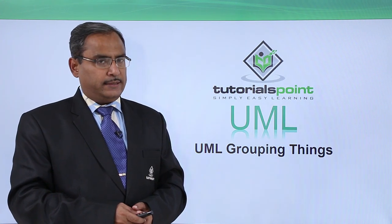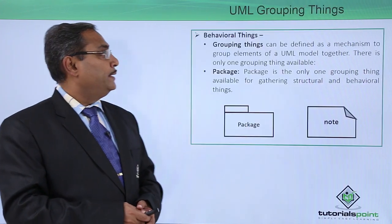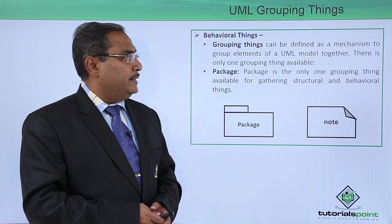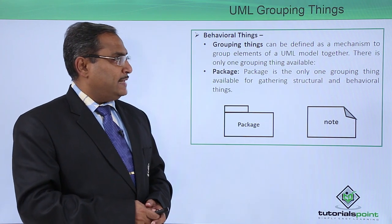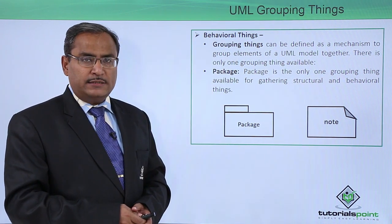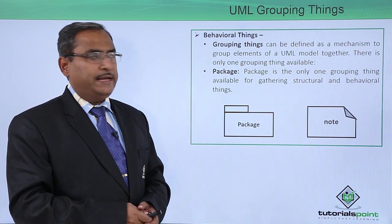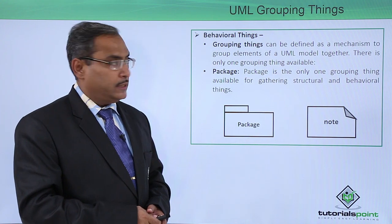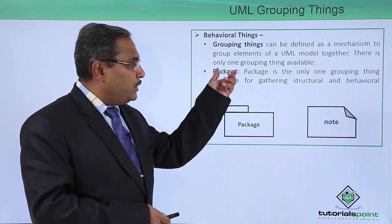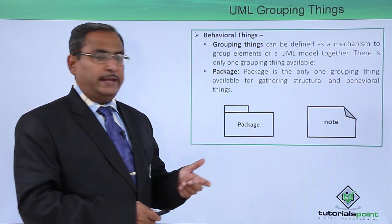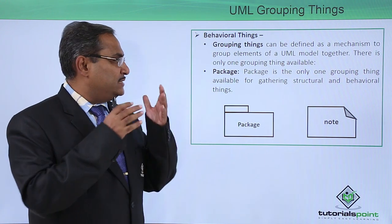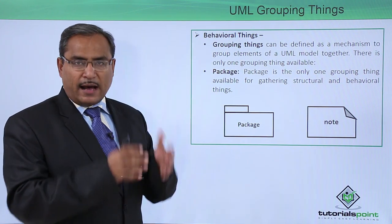EML Grouping Things. Grouping things can be defined as a mechanism to group elements of an EML model altogether. There is only one grouping thing available, and that is known as a package.